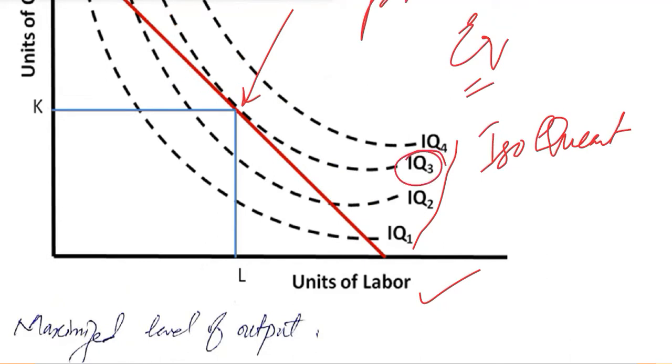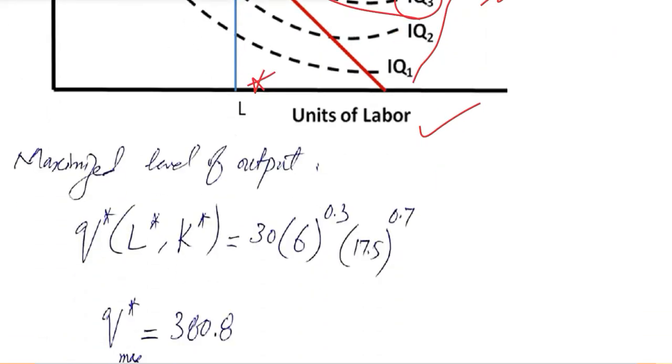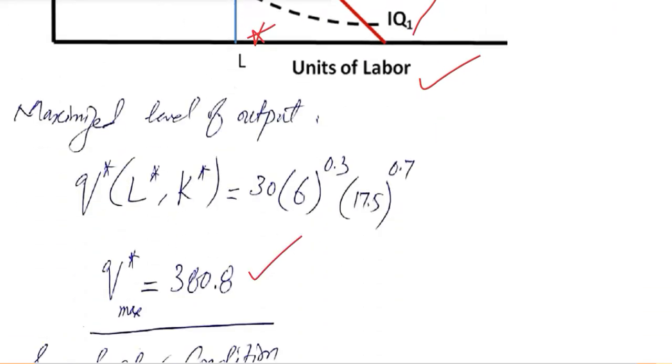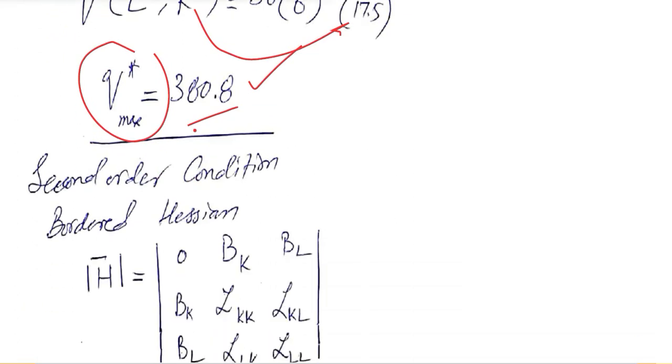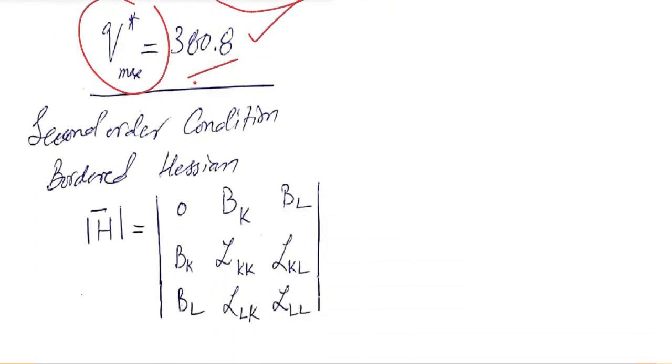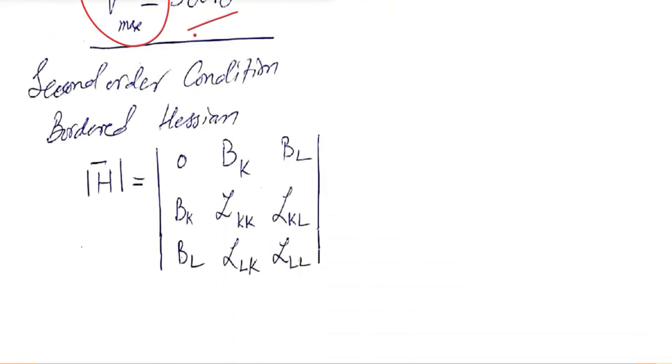This is something we have studied in our microeconomic analysis. And now we are going to find this certain value, that is the maximum value that we can find using the critical values of labor and capital. I substitute the value of labor and capital and I found that the answer of this expression is 380.8, which is the maximized output. The second order condition is the bordered Hessian condition that we have been using before.